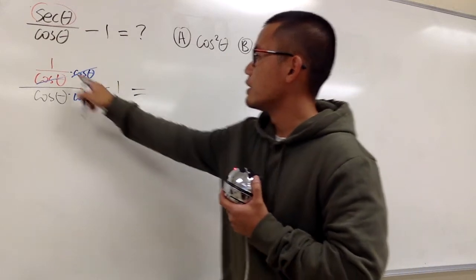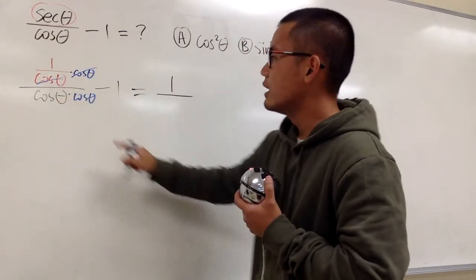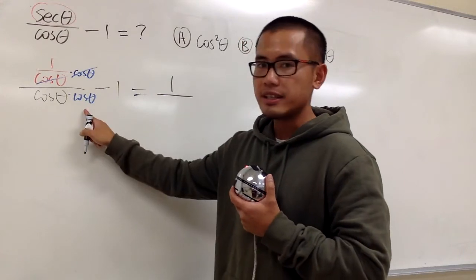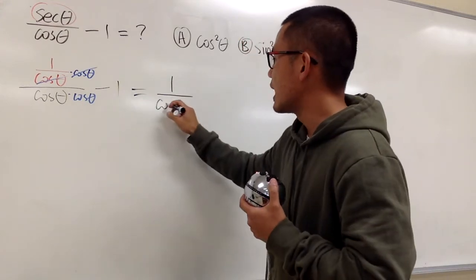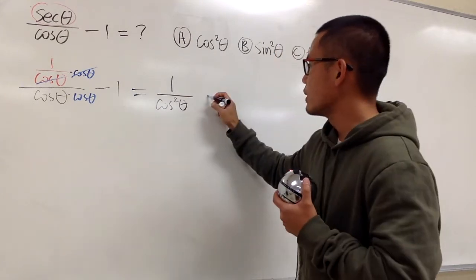And then we will have just the 1 on the top right here. So we'll have 1 over, and this is cosine theta times cosine theta, namely cosine squared theta. And then we still have the minus 1 right here.